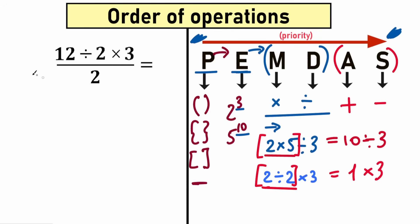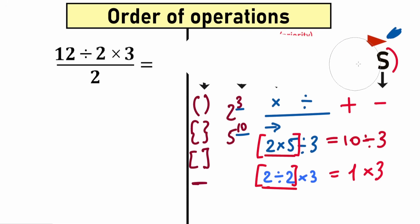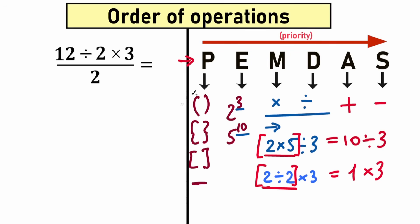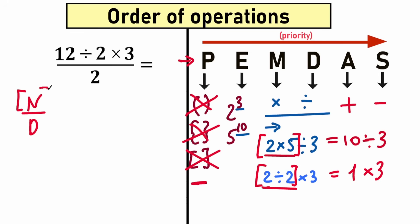First of all, as I said, we need to scan from left to right in terms of the PEMDAS elements. Letter P stands for parentheses — let's scan our question for parentheses. We don't see any. But there's one really interesting moment: we don't have these curly brackets or square brackets, but we do have a fraction bar. As I said before, the fraction bar is a grouping symbol — we group the numerator and divide it by the denominator.